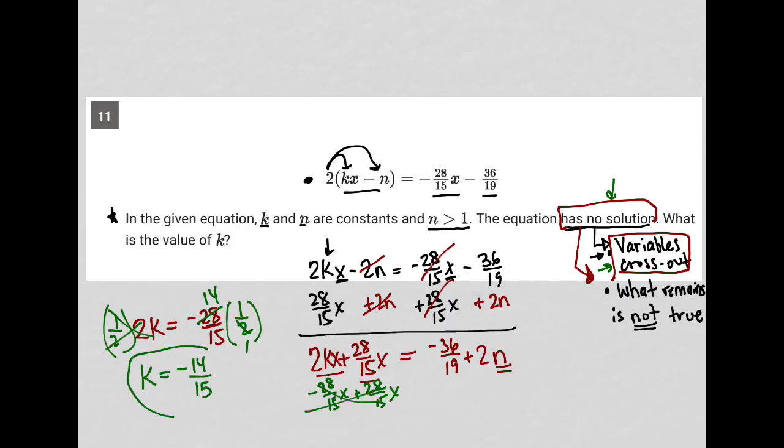There's my answer. That's what k has to equal and you'll see that the result of all this is this entire left hand side is just zero and then it's going to equal negative 36/19 plus 2n.